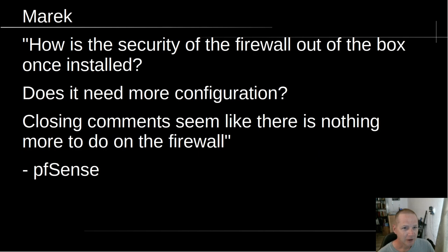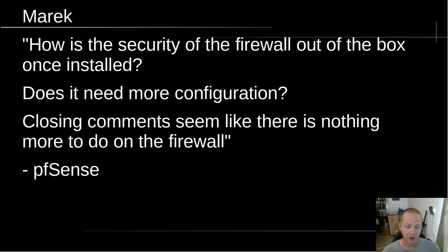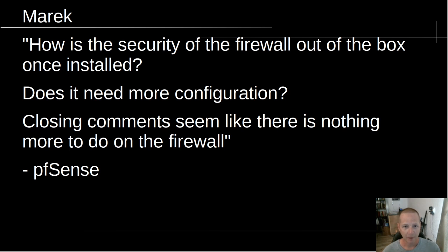From Merrick, asking about pfSense: how is the security of the firewall out of the box once installed? Does it need more configuration? He noticed that in my pfSense install videos I don't do a ton of configuration — and that's true. I just set it up and show you how to make sure you've got the right NICs connected. You want at least a WAN and a LAN connection, and once those are connected correctly, you're pretty much set. By default, the firewall only allows outgoing connections from the LAN to the WAN — nothing incoming gets through until you open it up.